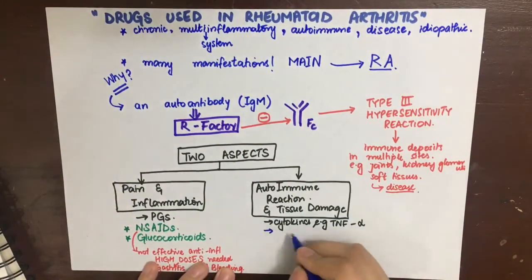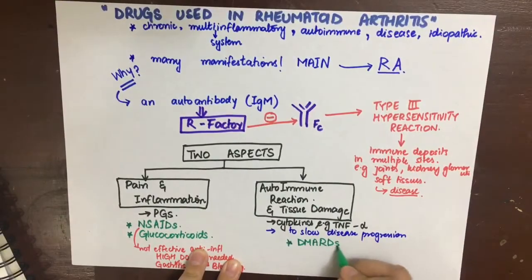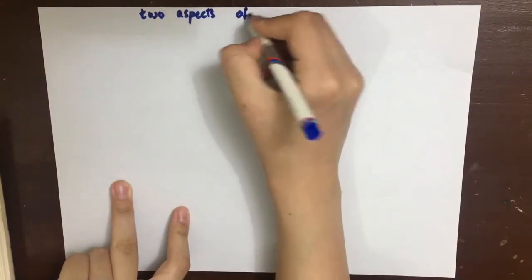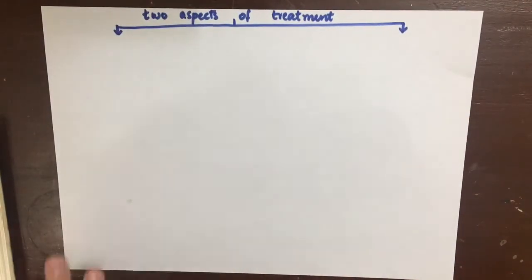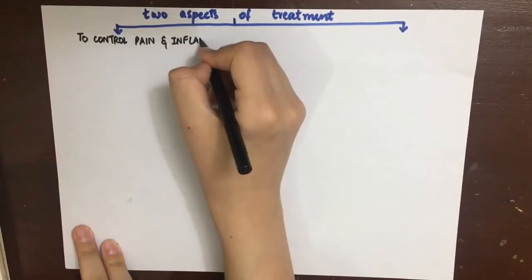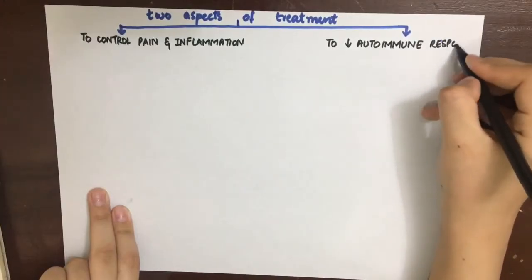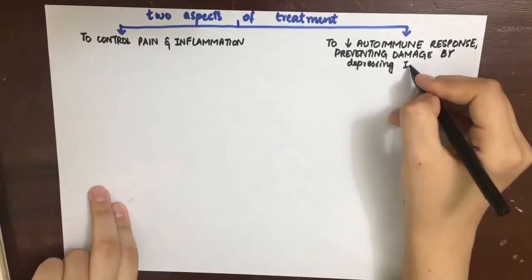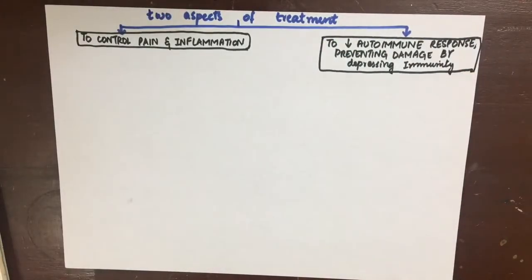To combat the immune response mediated by cytokines such as TNF, we use DMARDs — disease-modifying antirheumatic drugs. The first class of drugs combats pain and inflammation, and the second class, the DMARDs, decreases the autoimmune response and prevents further tissue damage by suppressing the immune system. To control pain and inflammation we mainly use NSAIDs and glucocorticoids.